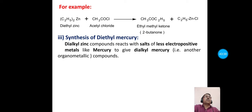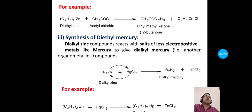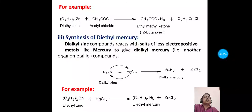The next application is synthesis of diethyl mercury by a substitution reaction. Dialkyl zinc compounds react with salts of less electropositive metals like mercury to give dialkyl mercury — another organometallic compound. The zinc in dialkyl zinc is replaced by mercury, forming dialkyl mercury and zinc chloride as a side product. Specifically, diethyl zinc plus HgCl₂ gives diethyl mercury (C₂H₅)₂Hg and ZnCl₂ as a byproduct.